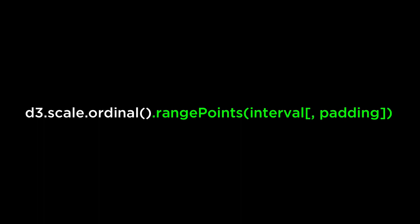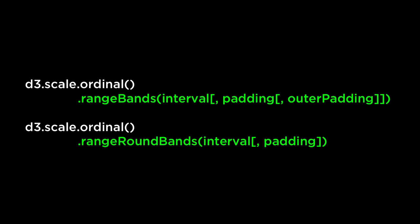D3.scale.ordinal.rangePoints is for a range that has a specified continuous interval. The interval is a two-element array representing the minimum and maximum value. The interval is then subdivided into N evenly spaced points, where N is the number of unique values in the input domain. Padding can be applied to the interval at the start and end of the range.